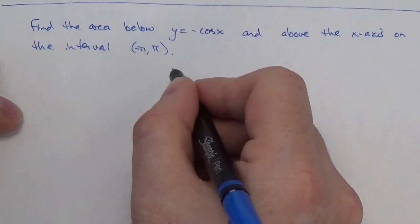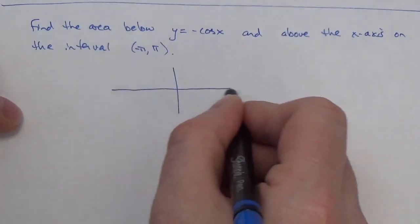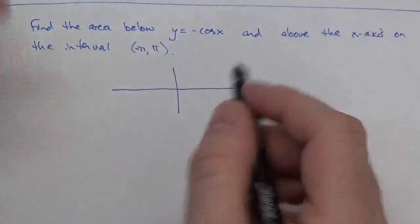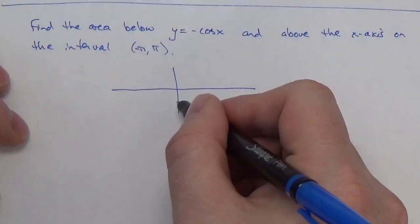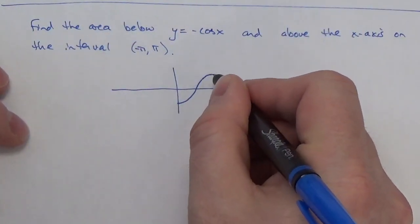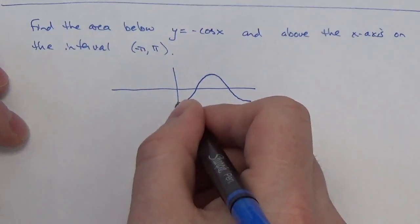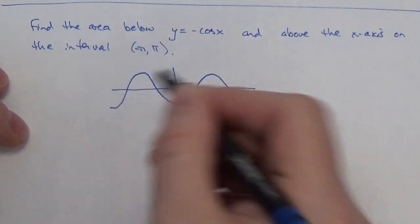Well, I guess it would help, first of all, to have a bit of an idea of what it is we're looking at here. Now, negative cosine is going to start down here, because it's just going to be the reflection of regular cosine.